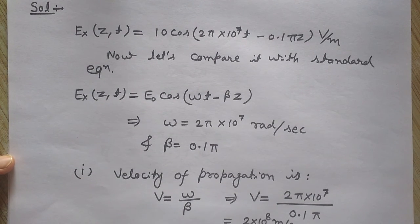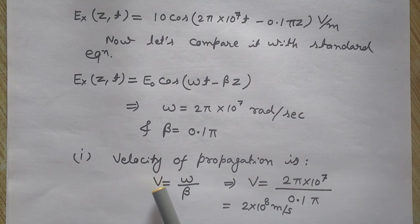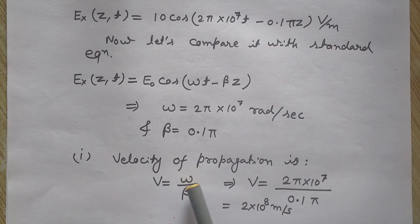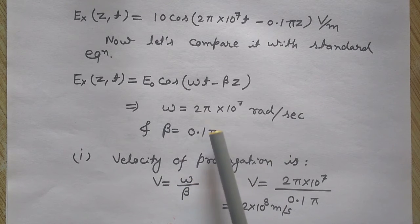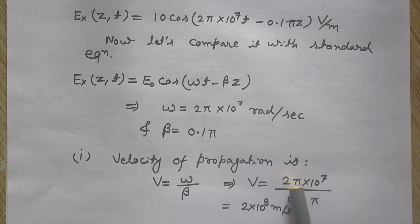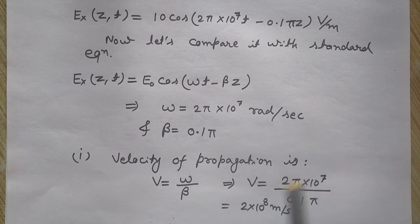I also know that the velocity of propagation is given by v = ω/β. I have both of these, so v = (2π × 10^7)/(0.1π) = 2 × 10^8 m/s.